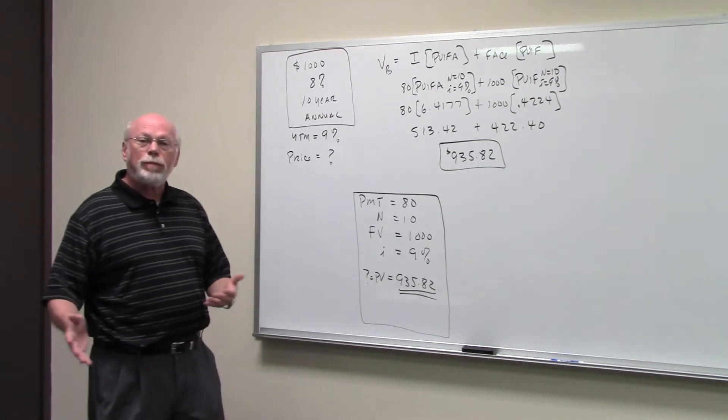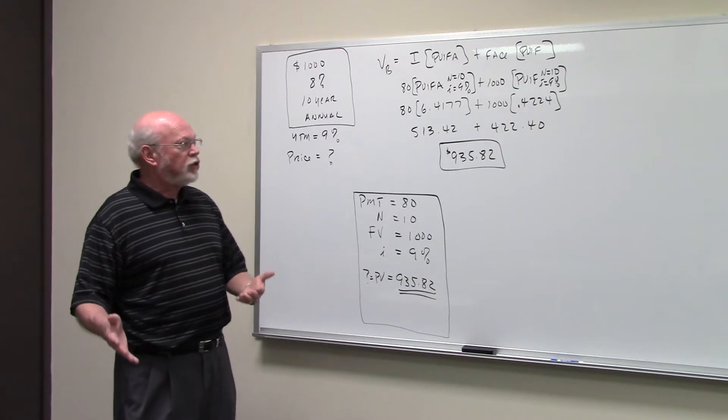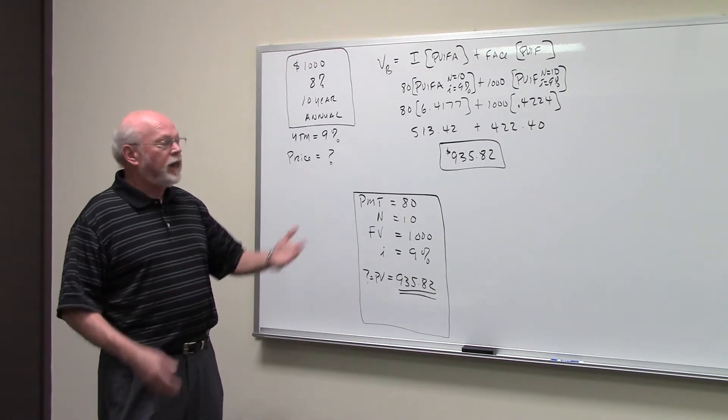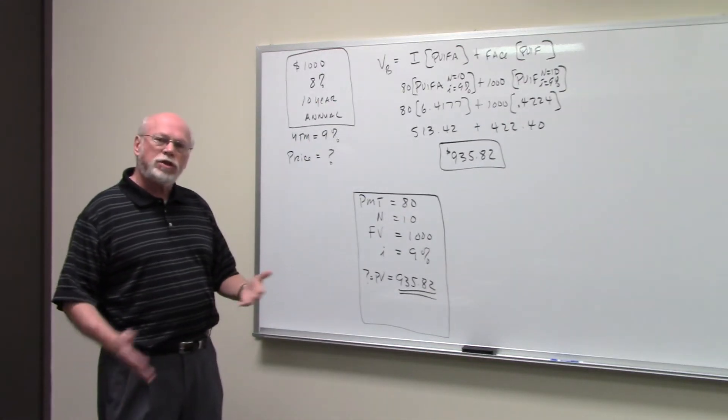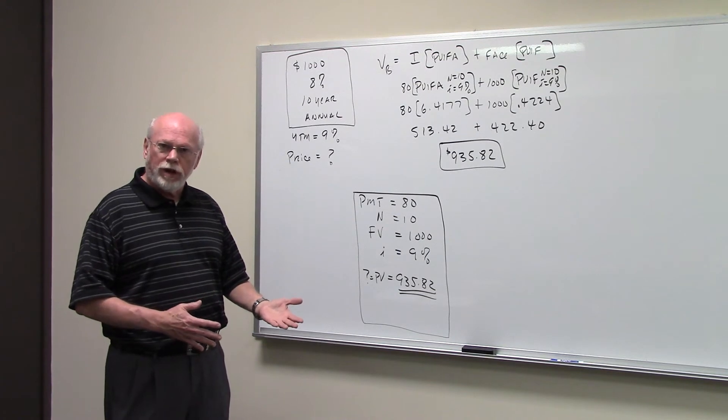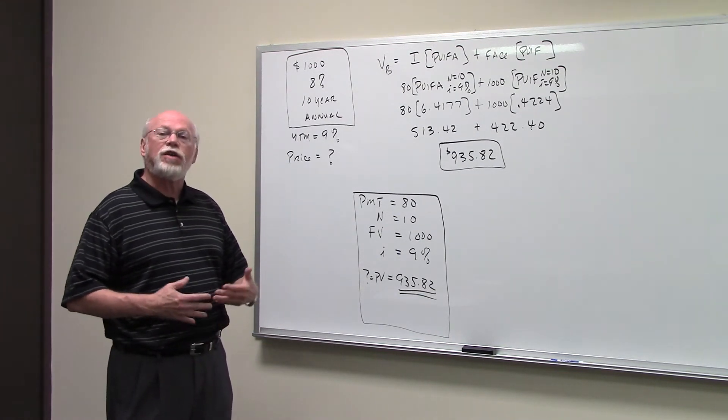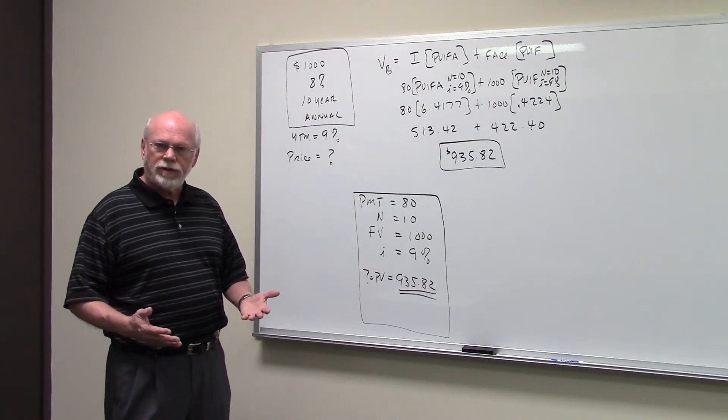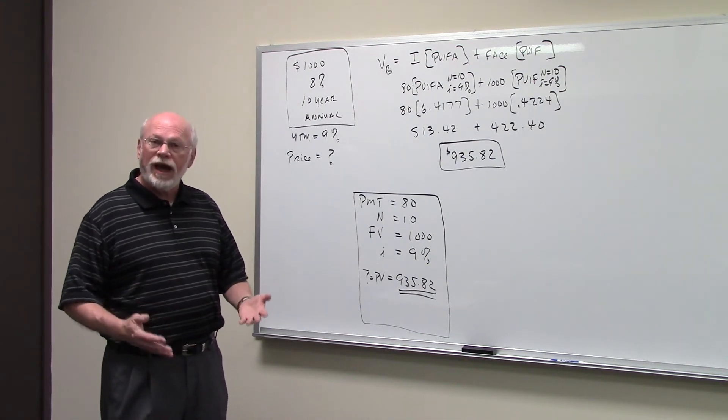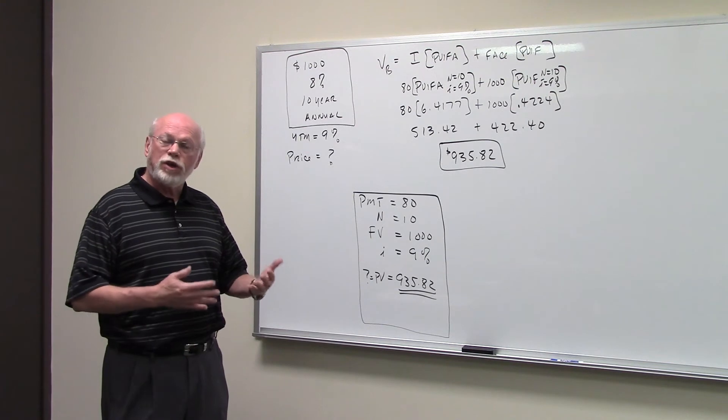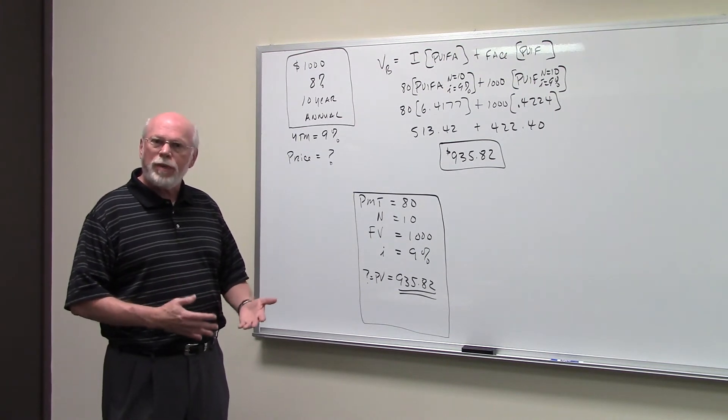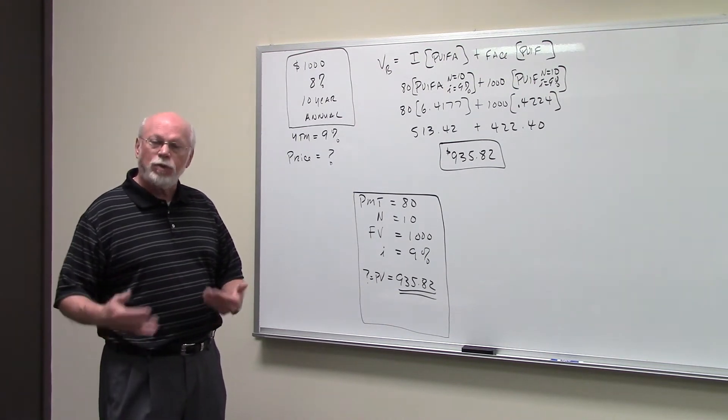We're going to use the bond pricing formula to calculate the value of the bond. You see at the top here, which goes with the lecture part of this course, the value of a bond is the present value of all the future cash flows. With a bond you have two kinds of cash flows: you have an annuity, which is the periodic payment of interest, and you have a lump sum cash flow, which is the face value of the bond.